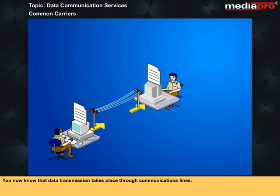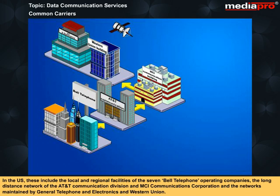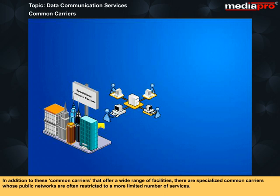Data transmission takes place through communication lines. The most common large public telephone and telegraph networks are offered for use by common carriers. In the US, these include the local and regional facilities of the seven Bell Telephone Operating Companies, the long distance network of the AT&T Communication Division and MCI Communications Corporation, and the networks maintained by General Telephone and Electronics and Western Union. In addition to these common carriers, there are specialized common carriers whose public networks are often restricted to a more limited number of services.